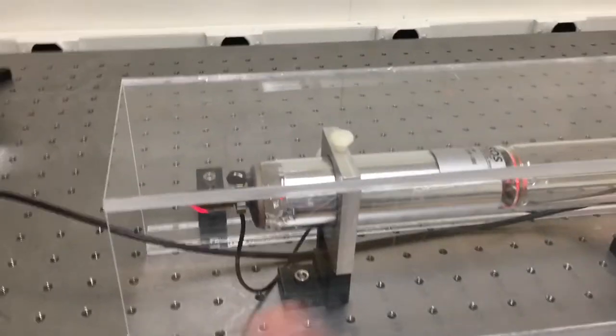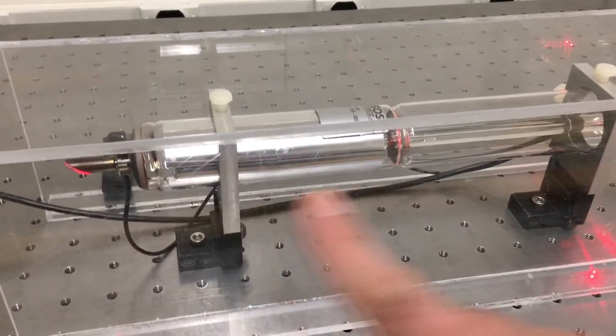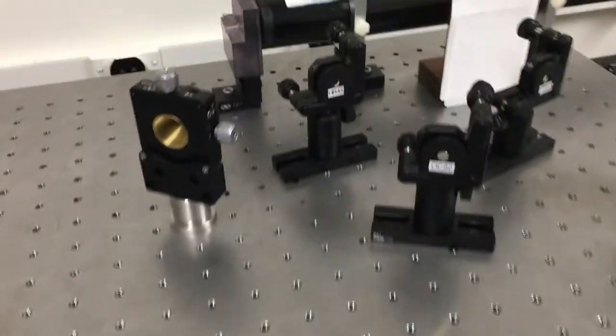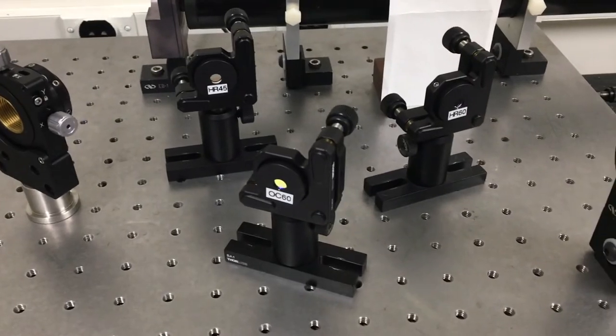To make a laser, the light has to bounce back and forth between the two ends of the cavity. So we add mirrors at each end. Here's an assortment of various mirrors we can add into the cavity.